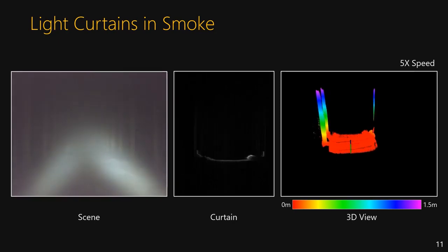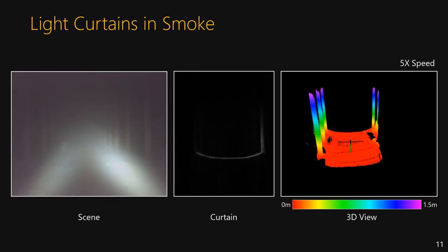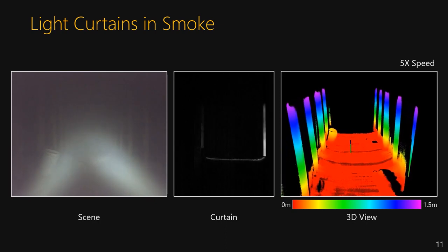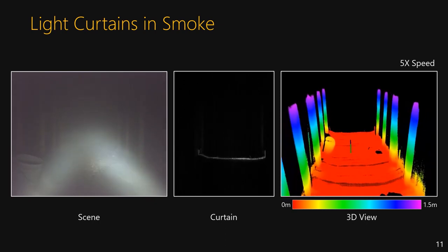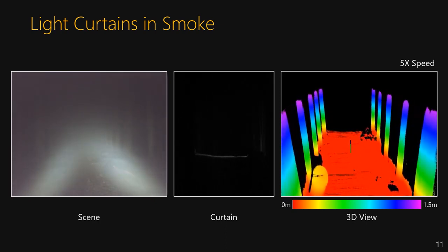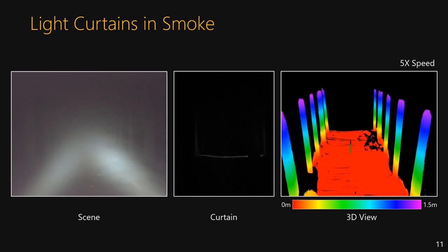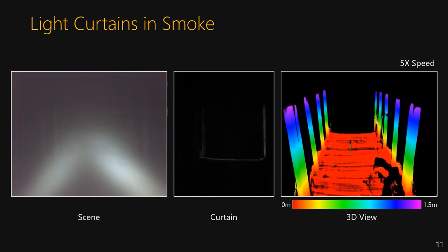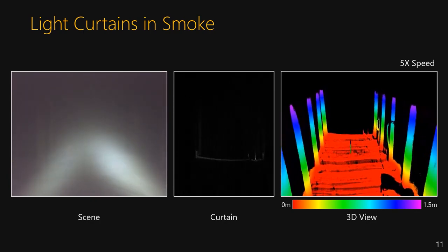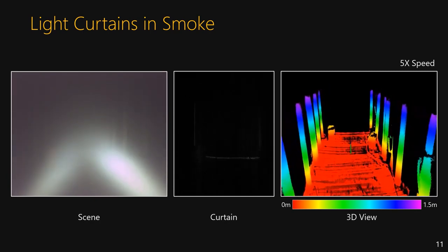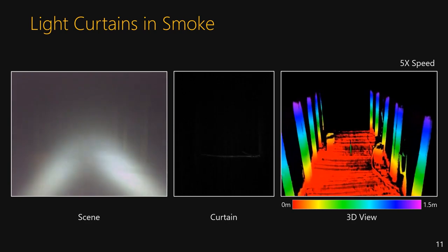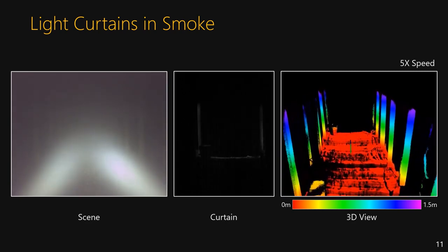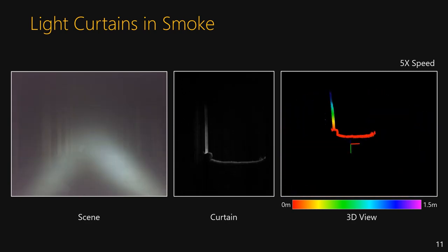Light curtains are also effective in smoke. This video shows the light curtain onboard a robot driving through a smoke-filled tunnel. Since triangulation light curtains only capture a single line at a time, they block most scattered light and work well in smoke. As the robot traverses the tunnel, a planar light curtain is pushed through the volume and captures the floor, the studs on the wall, and the objects in the scene.